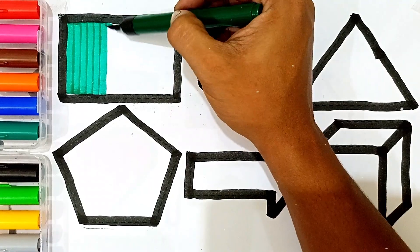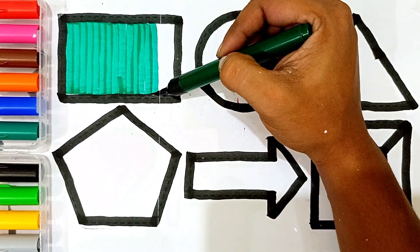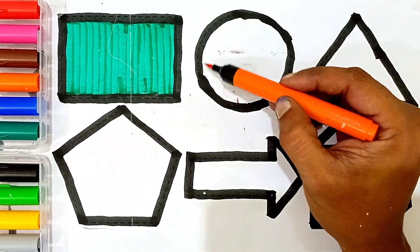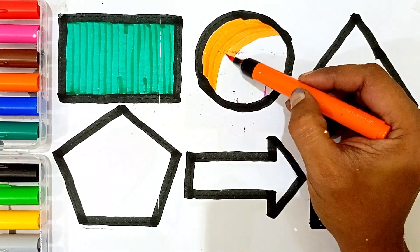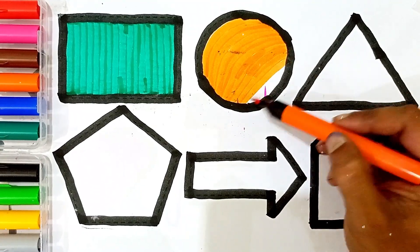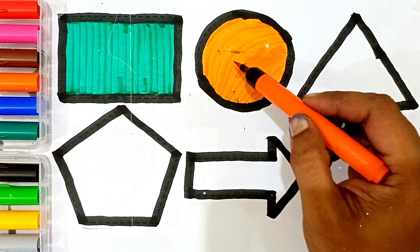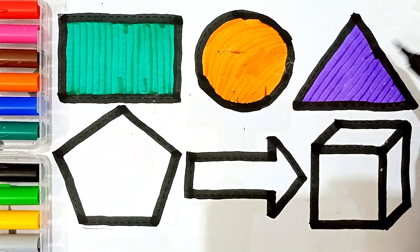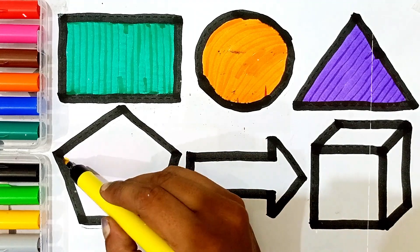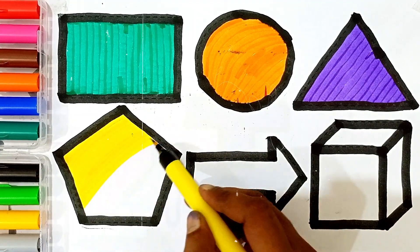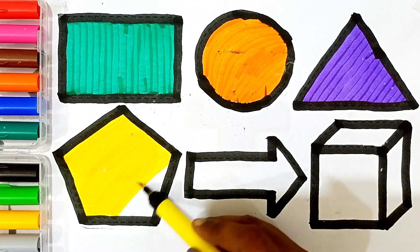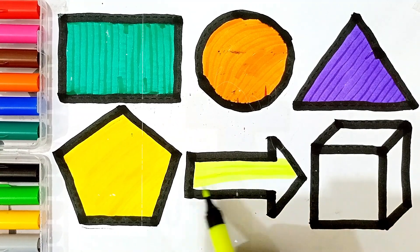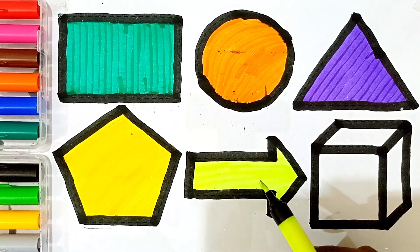A B C D E F, green color rectangle. H I J K L M N O P Q R S T U V W X Y and Z. Circle, circle. Triangle. Yellow color pentagon. Yellow green color right side arrow.